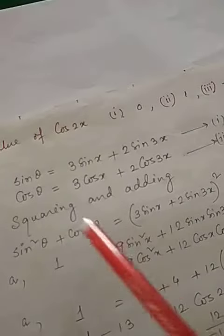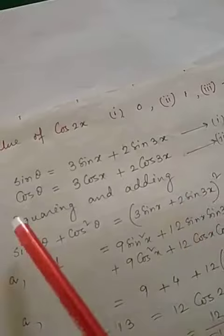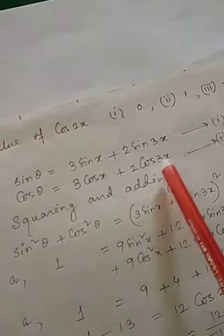Given that sinθ is 3sinx plus 2sin3x, and cosθ is 3cosx plus 2cos3x.